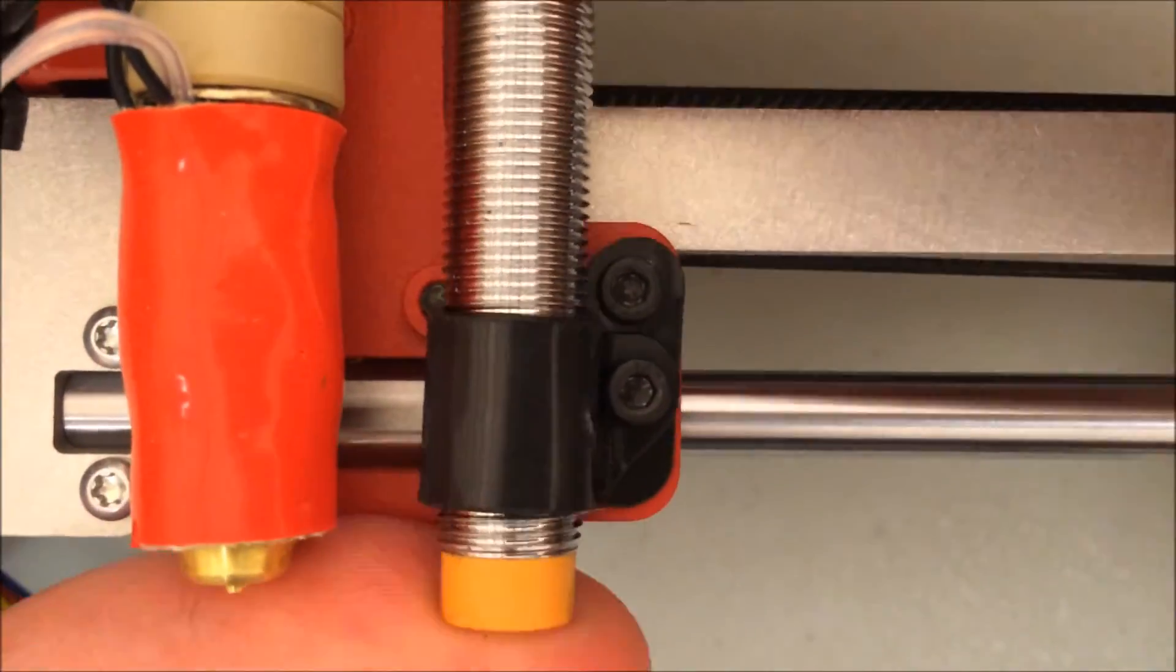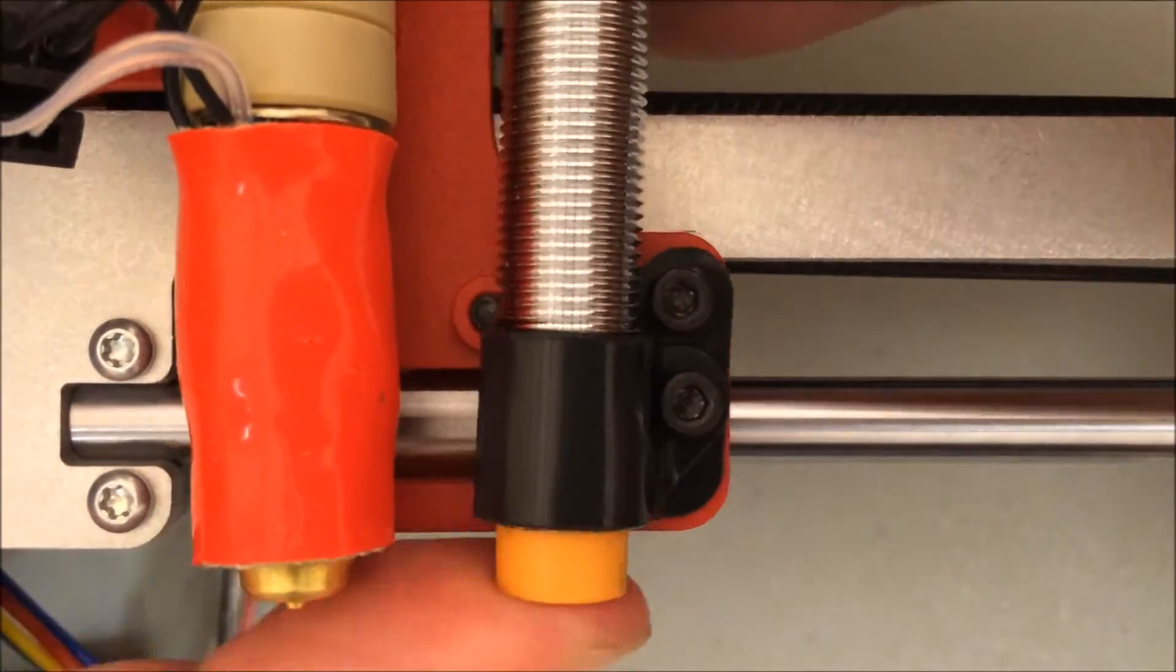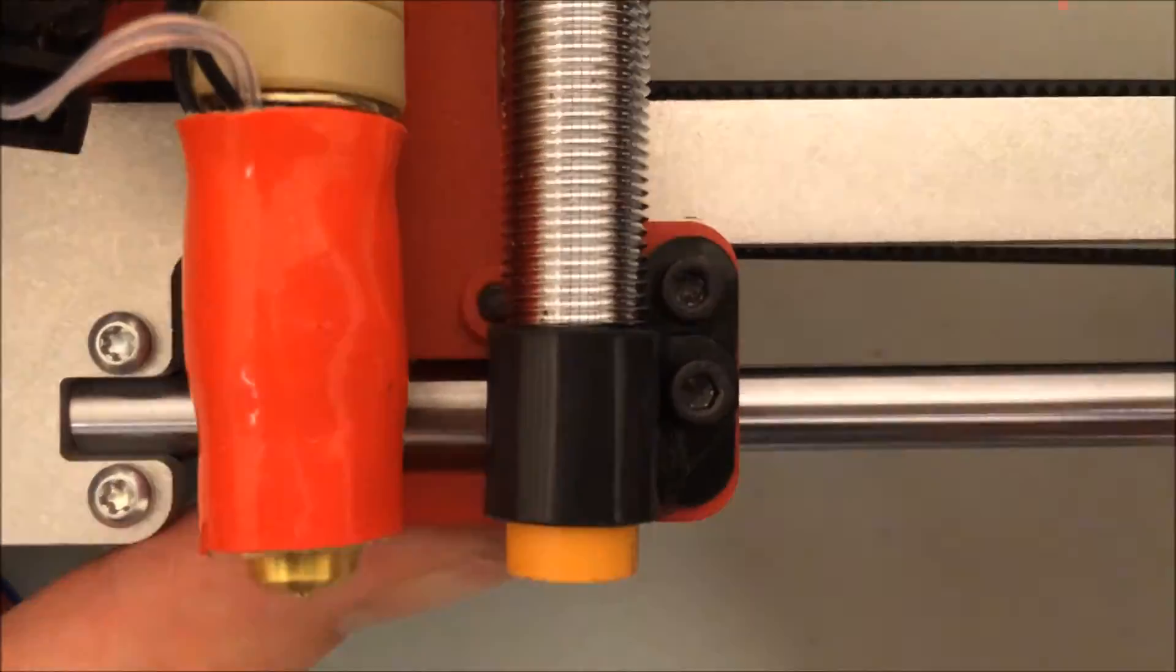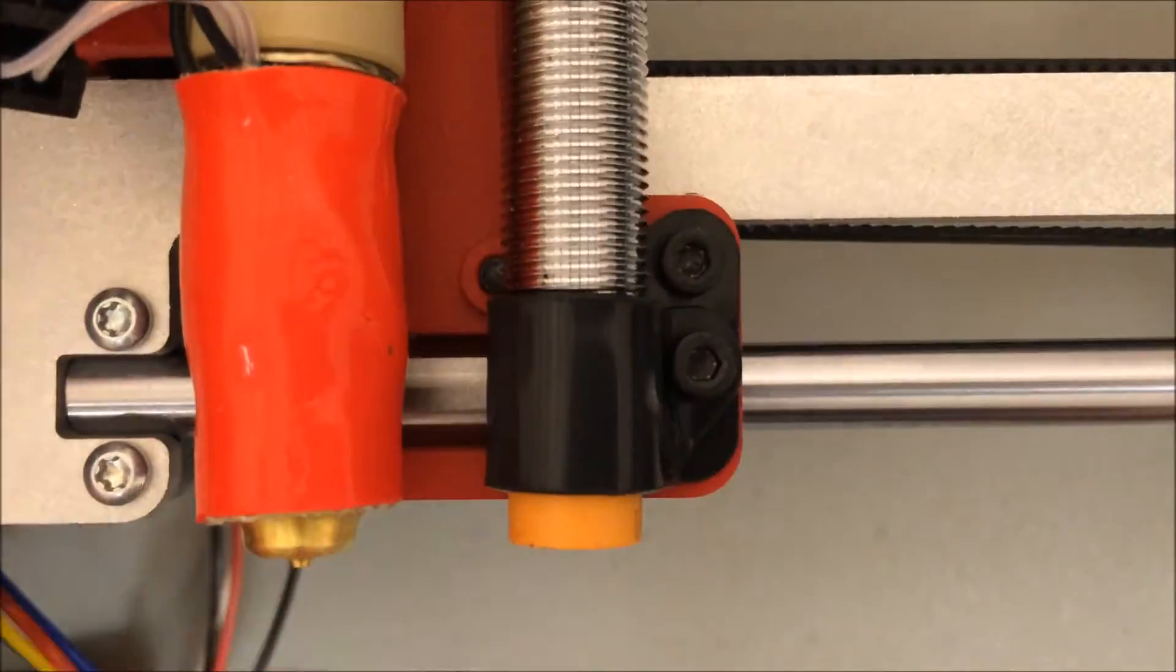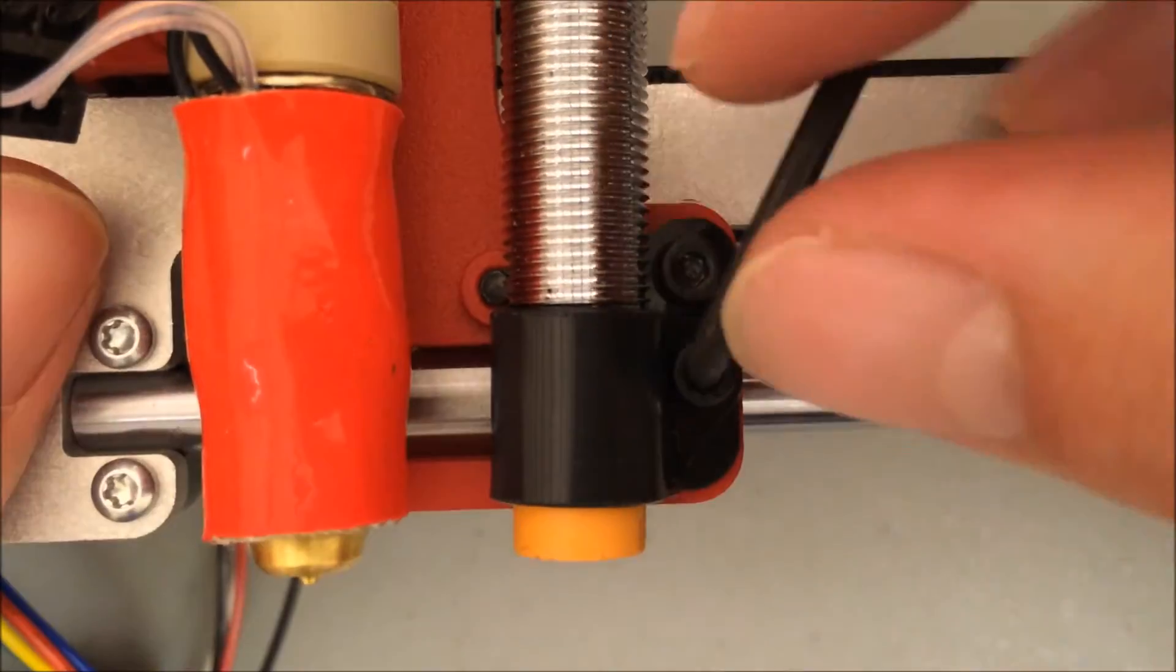I haven't tightened that last screw all the way yet. I can wiggle the probe back and forth and lift it up higher than the nozzle tip of the hot end. Now that's a good height, I can tighten that screw in place.